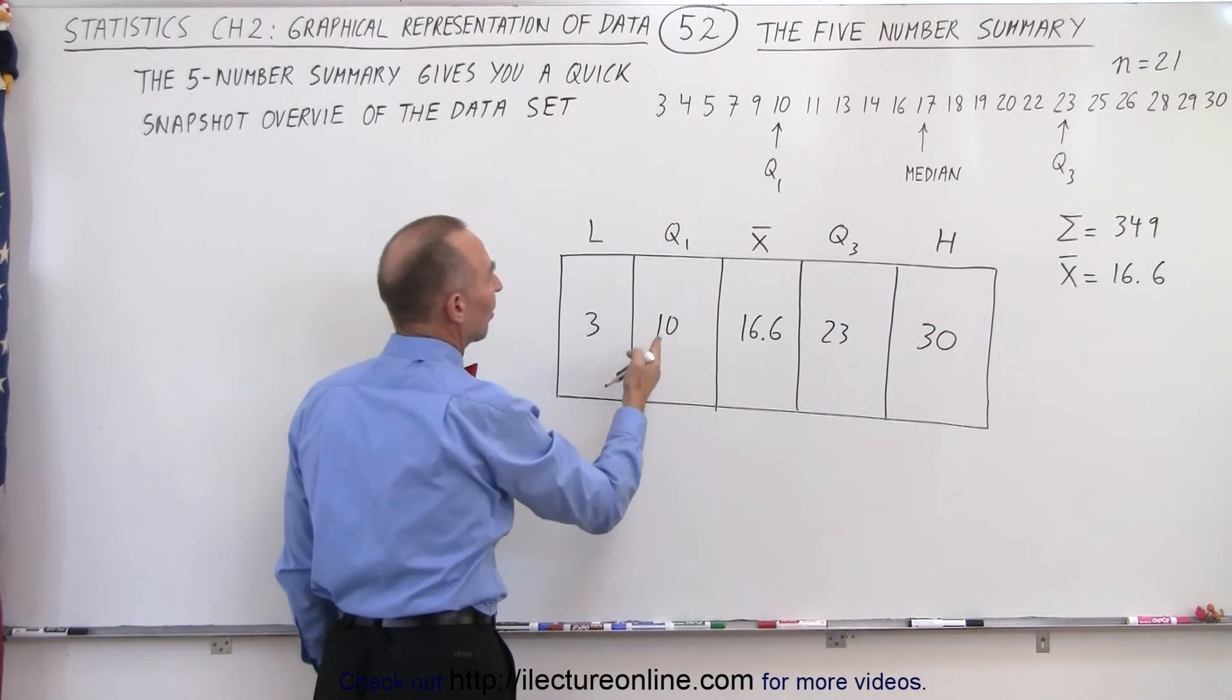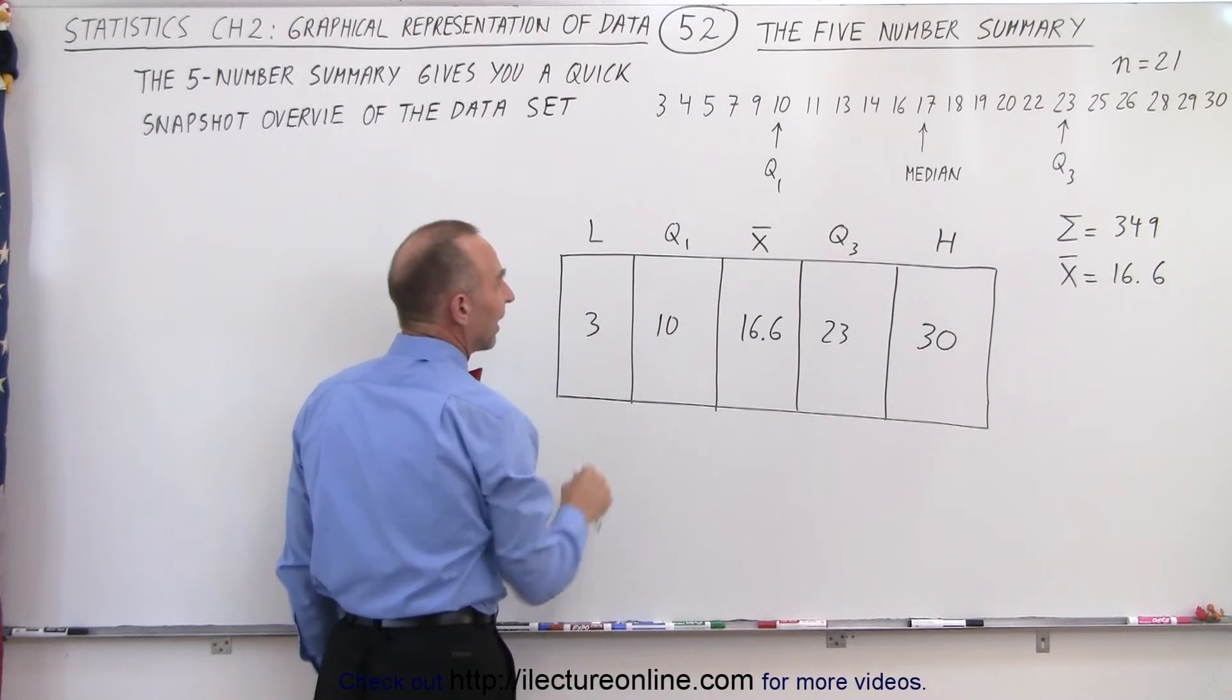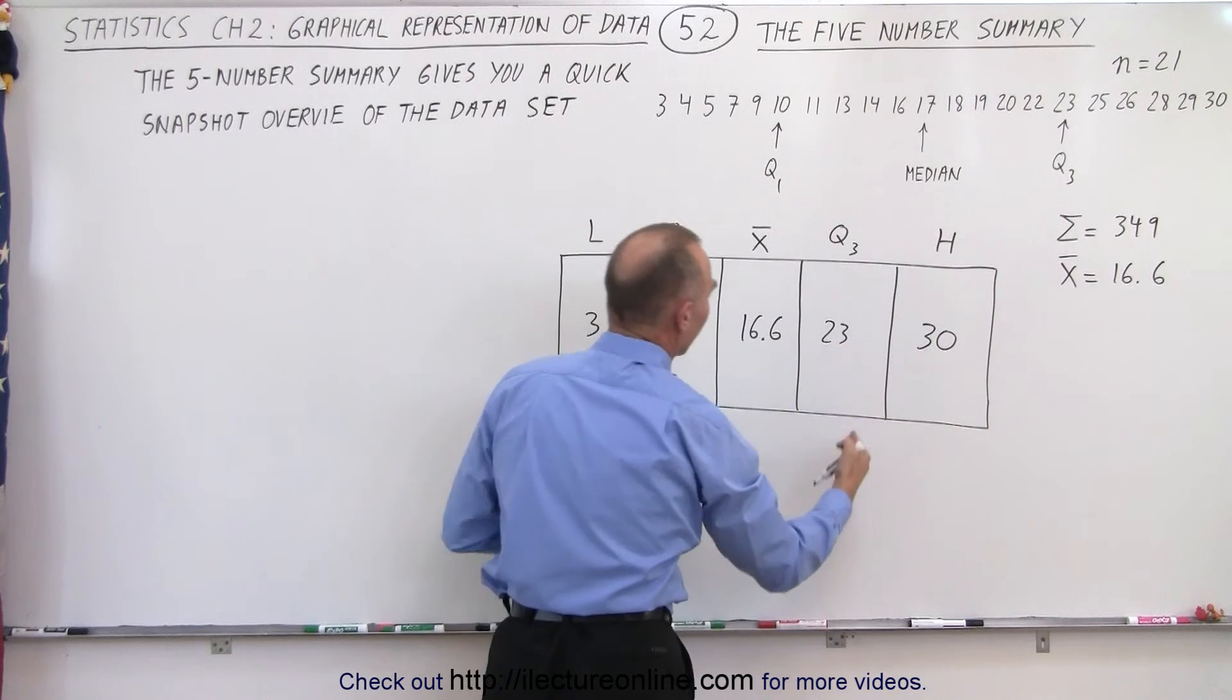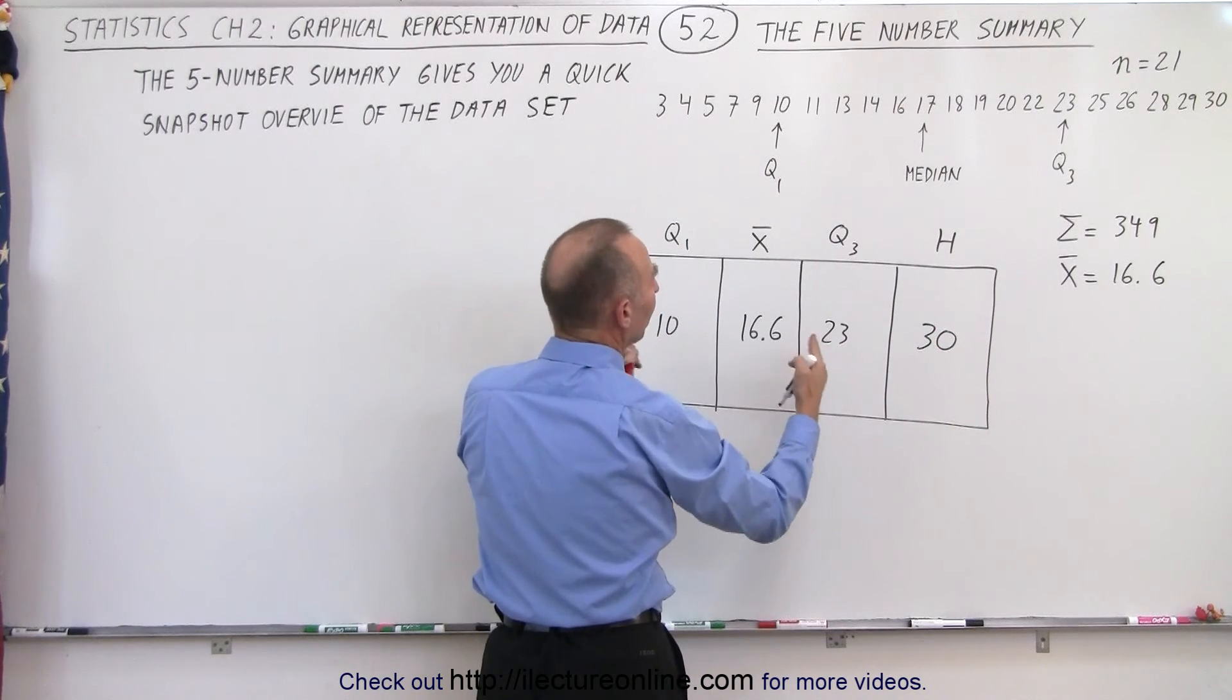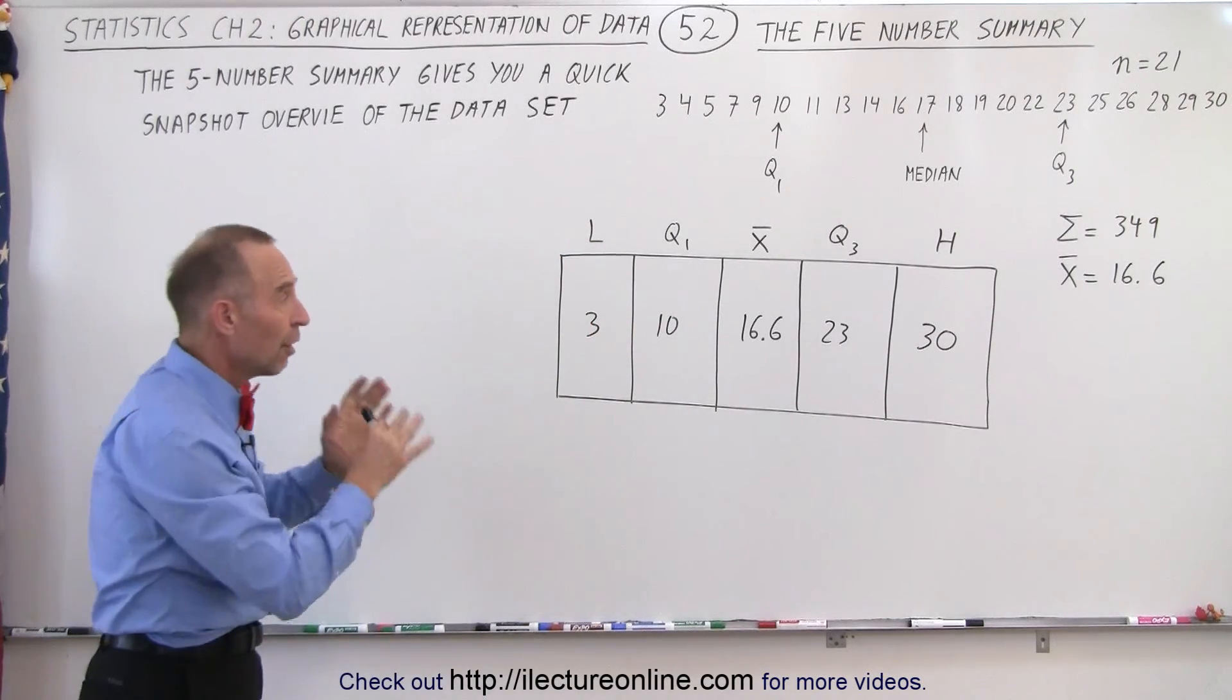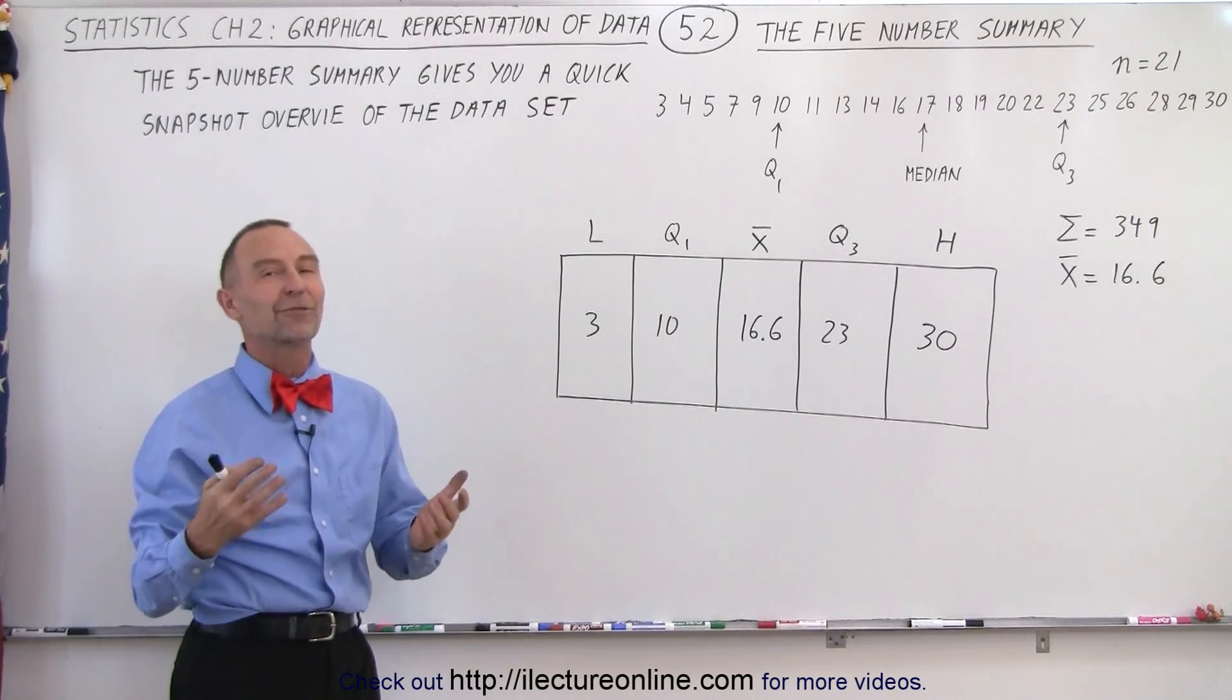Basically this tells us that 25 percent of the values are smaller than 10. And this tells us that 25 percent of values are larger than 23. And that roughly 50 percent of all the values fall between 10 and 23. So that gives us a quick overview of what the data set is all about called the five number summary.